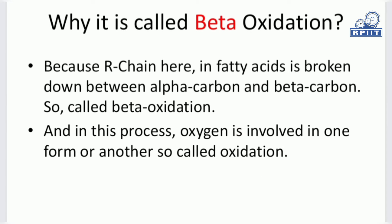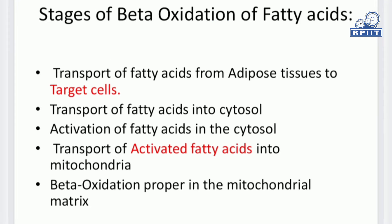A common question is: why is it called beta oxidation? Because the fatty acid chain is broken down between the alpha carbon and the beta carbon. So it is called beta oxidation.